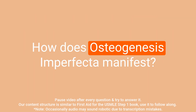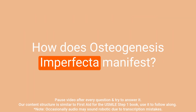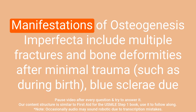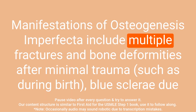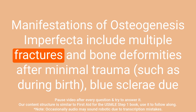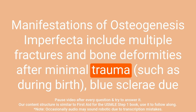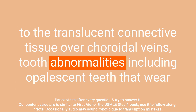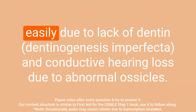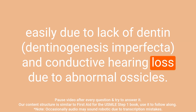Question: How does osteogenesis imperfecta manifest? Answer: Manifestations include multiple fractures and bone deformities after minimal trauma, blue sclera due to translucent connective tissue over choroidal veins, tooth abnormalities including opalescent teeth that wear easily due to lack of dentin, and conductive hearing loss due to abnormal ossicles.